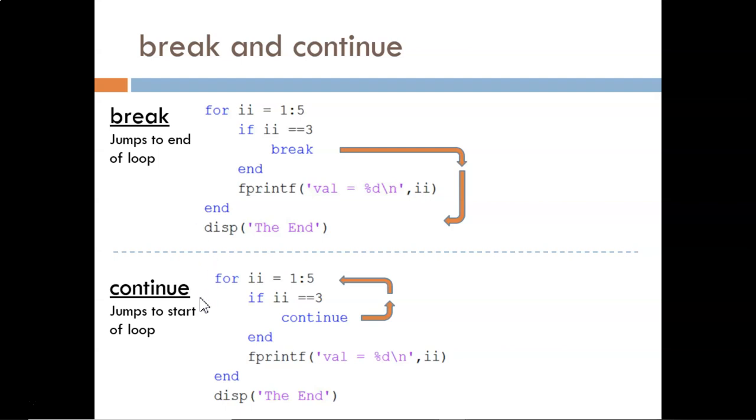If the continue command is reached, then the loop is short-circuited, meaning that the current iteration is stopped, but then we return back to the top of the loop.